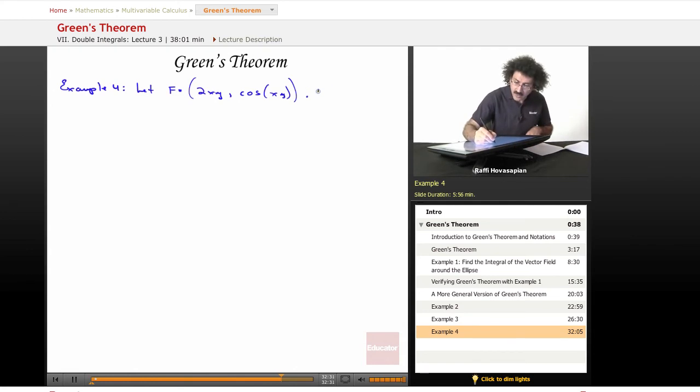Our task is to find the integral of f over c, where c is equal to the two curves, c1 and c2, where c1 is equal to sine x, and c2 is equal to sine 2x. And we would like x to range from 0 to pi.